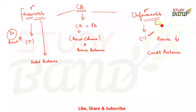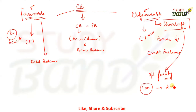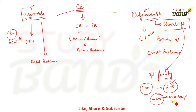Unfavorable balance is also called overdraft. Overdraft is a facility from the bank — for example, if you have only 100 rupees in your bank but you withdraw 200 rupees, your bank balance becomes negative (minus 100 rupees). That is overdraft — when the balance is not in your favor, it is a liability, i.e., unfavorable balance.